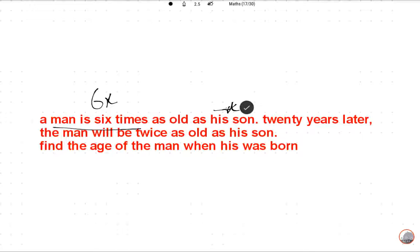Twenty years later, the man will be twice the age of the son. Twenty years later, so what will be the age of the son? Twenty years later, X plus 20, because now the age of the son is X, then after 20 years it will be X plus 20.